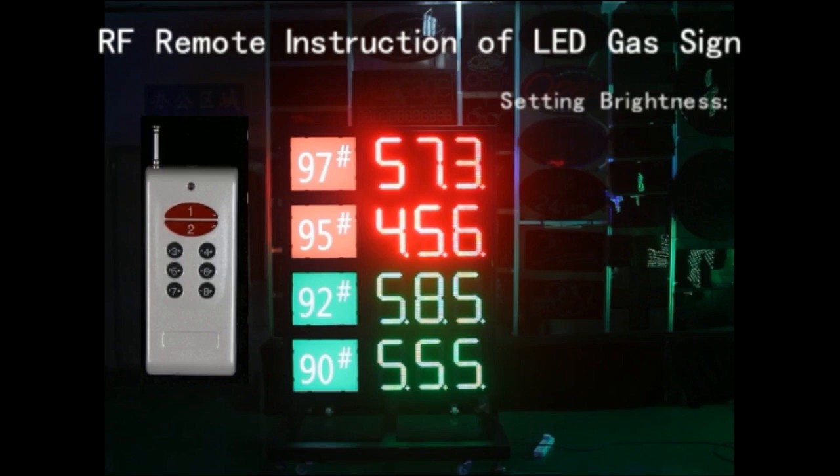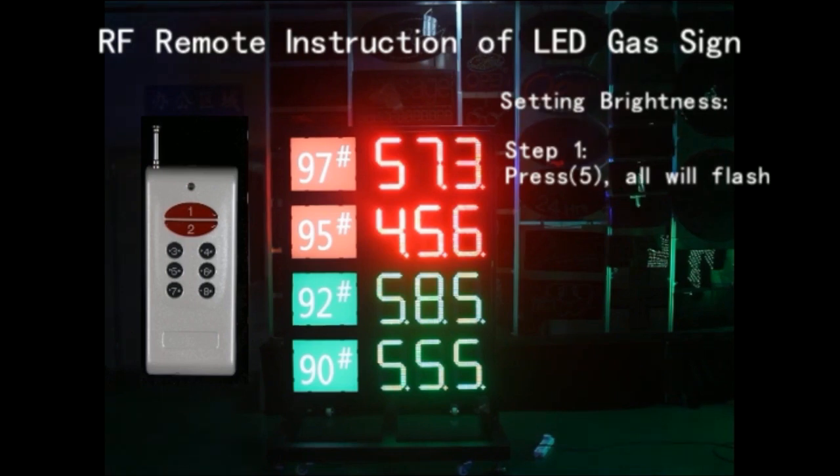RF remote instruction for setting brightness. Step 1: Under the display working, press button 5.